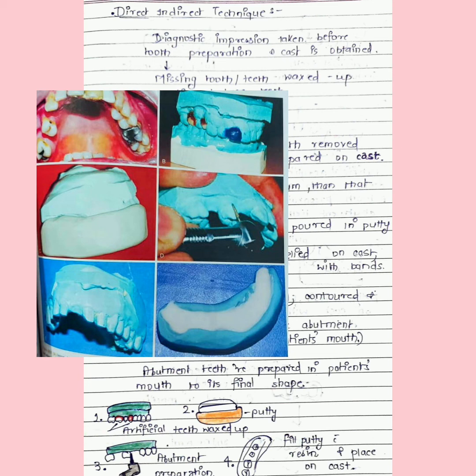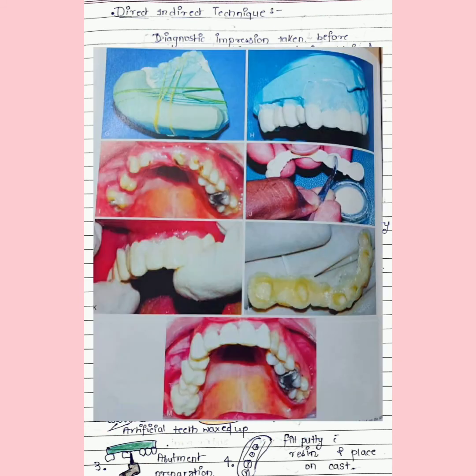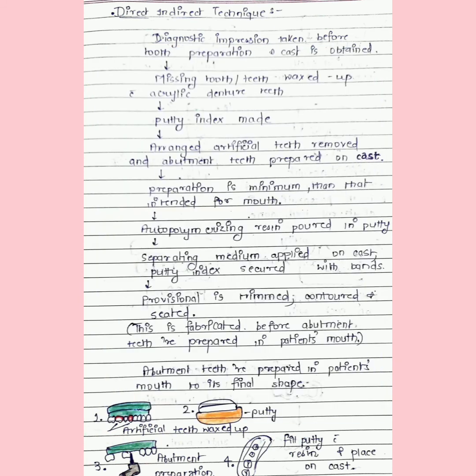The auto-polymerizing resin is poured in putty, then separating media is applied on the cast. The putty index is secured with bands, and the provisional we get is trimmed, contoured, and seated. This is pre-fabricated before abutment teeth are prepared in the patient's mouth. Abutment teeth are prepared in the patient's mouth to their final stage.